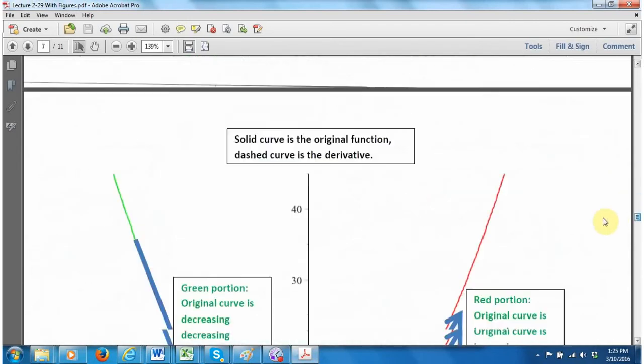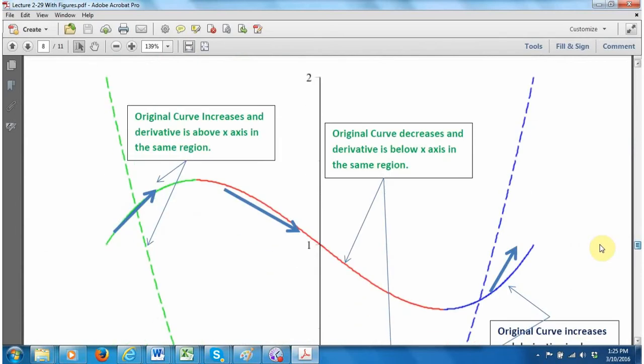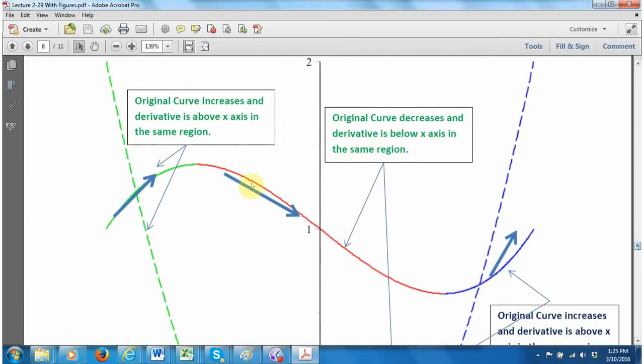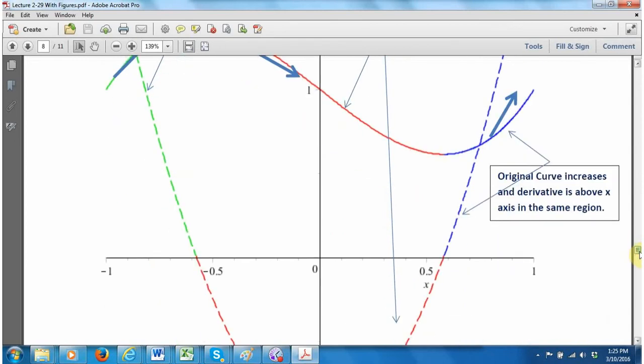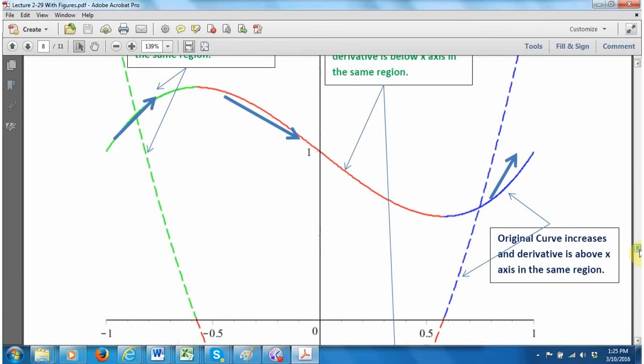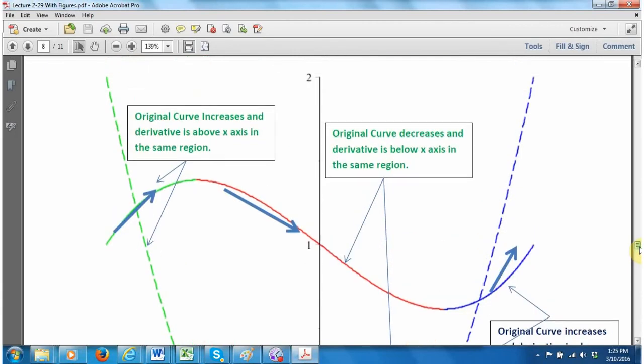I wanted to show you a second example. Here's a second example. I color-coded it similarly so that you could see everything happening. The solid represents the original curve, the dashed represents the derivative. The green here is an increasing region of the original curve and the green dashed is entirely above the x-axis right at the same place where the original curve is increasing.